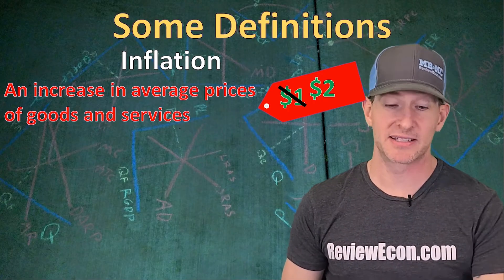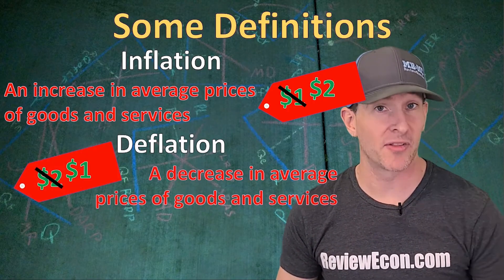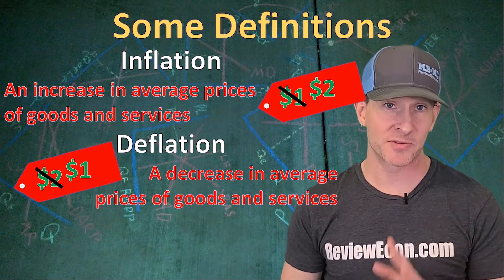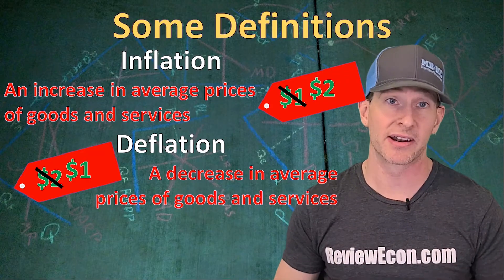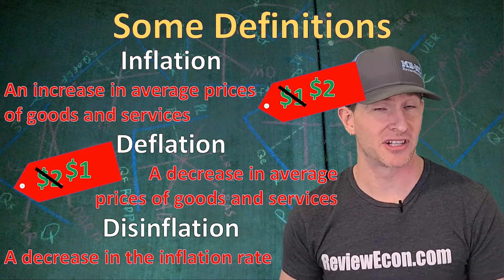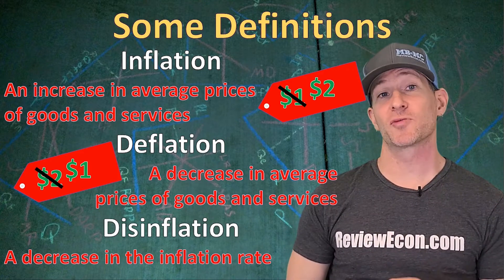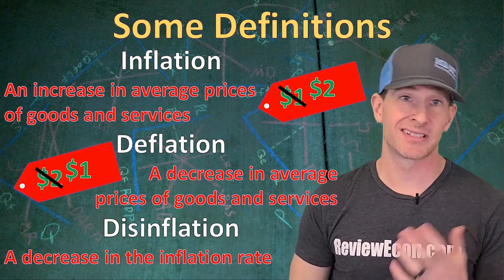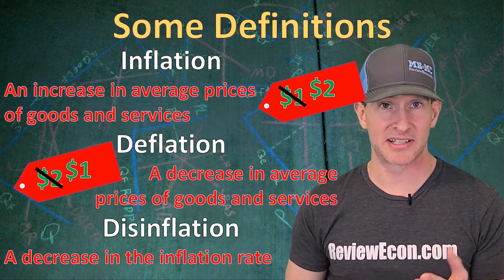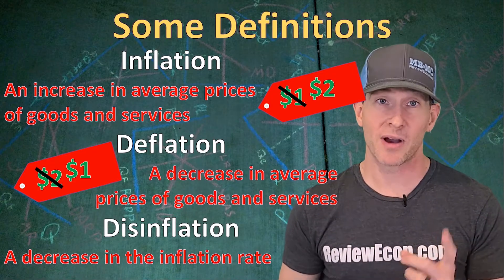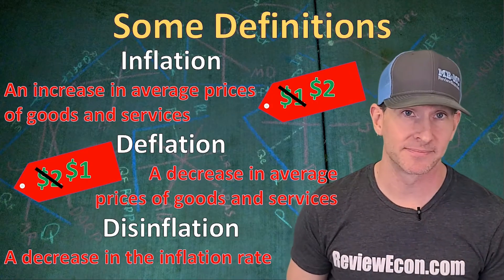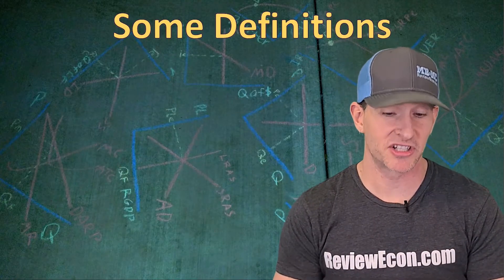Sometimes prices decrease as well, and when that happens we call that deflation — a decrease in average prices for goods and services throughout an economy. You could also see the term disinflation. That occurs when there is a high level of inflation, say 8%, and then the rate of inflation decreases to let's say 5%. Prices are still increasing but they're increasing at a slower rate.